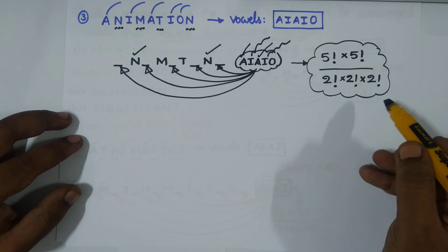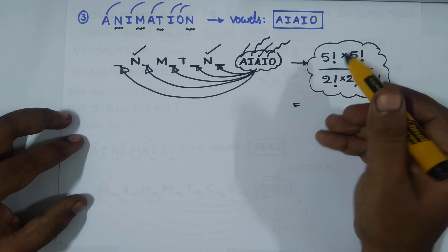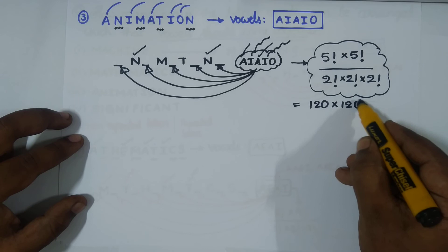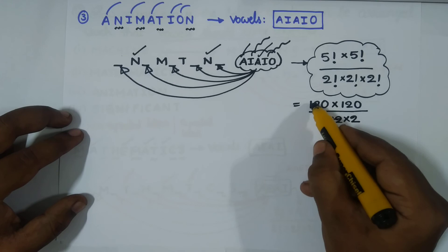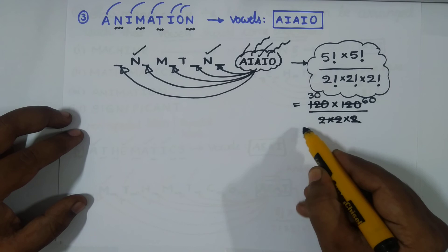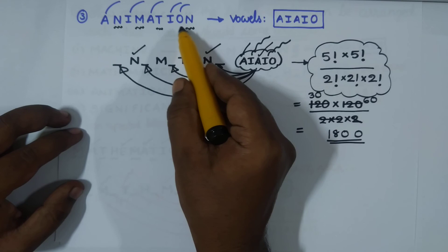Five factorial is 5 × 4 × 3 × 2 × 1 = 120. So 120 × 120 = 14400. Two factorial is 2, and 2 × 2 × 2 = 8. So 14400 / 8 = 1800. We can arrange the word ANIMATION in 1800 ways such that the vowels A, I, A, I, O come together.